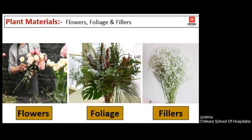Next is plant material — flowers, foliage and fillers. As in the previous session of flower arrangement, we have already discussed many colors and different flowers that we use: rose, carnation, orchids, bird of paradise, foliage — green leaves that we use — and the fillers to cover the rest of the open space in your arrangement.